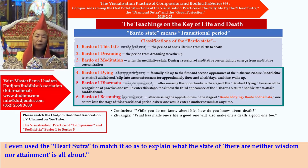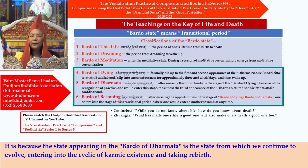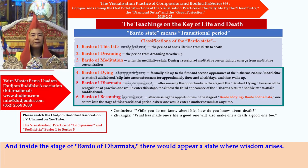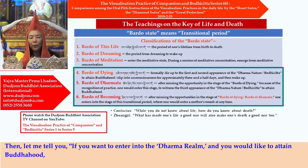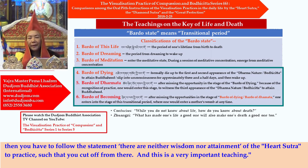I even use the Heart Sutra to match its size and explain what the state of 'neither wisdom nor attainment' is all about. The state appearing in the Bardo of Dhammata is the state from which we continue to evolve, entering into a cycle of karmic existence and taking rebirth. Inside the stage of Bardo of Dhammata, there would appear a state where wisdom arises. If you want to enter into the Dharma realm and attain Buddhahood, you have to follow the statement 'there are neither wisdom nor attainment' of the Heart Sutra to practice, such that you cut off from there.